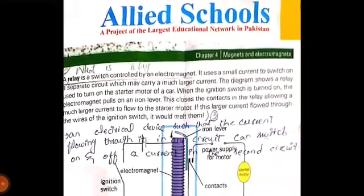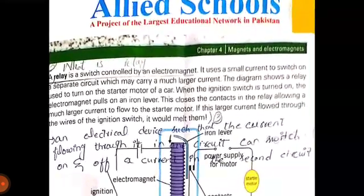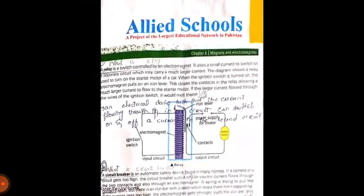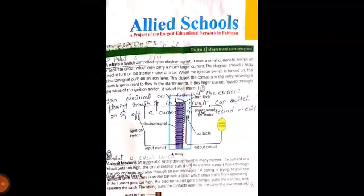A relay is a switch controlled by an electromagnet. It uses a small current to switch on a separate circuit, a separate circuit which carries a much larger current. It has two separate circuits - one with small current for switching and another for larger current flow.